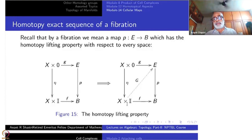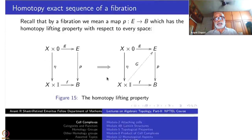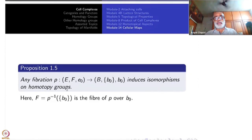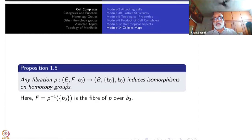If this is true for every space X and every map F from X cross I to B, then p is called a fibration. The proposition is that any fibration p from (E, F, E_0) to (B, B_0) induces an isomorphism of homotopy groups, where F is the fiber — the inverse image of the base point B_0 under p. This is our basic result using the fibration.